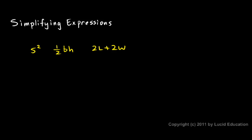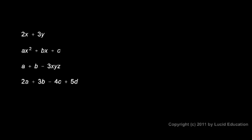An expression is often made of terms that are added together. Take a look at these expressions and note how many terms are in each one. Here's one thing added to another thing. The 2x is one term, and the 3y is one term. So there are two terms in this expression.